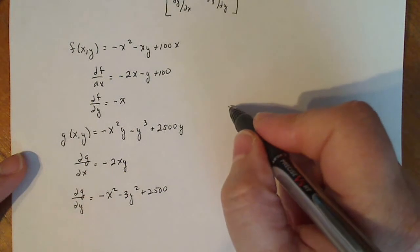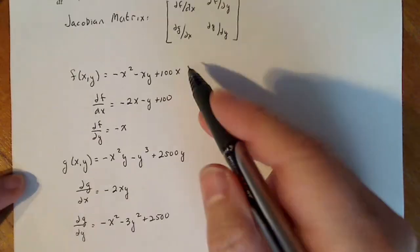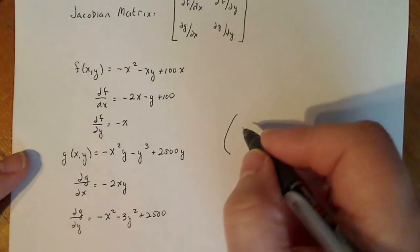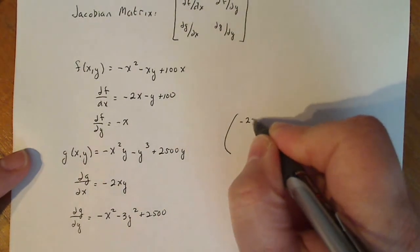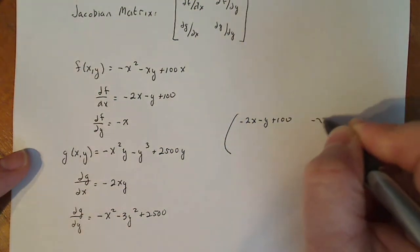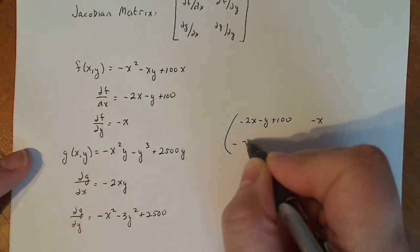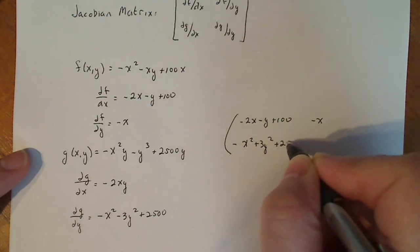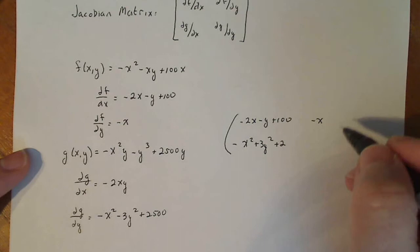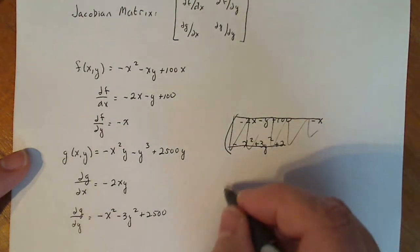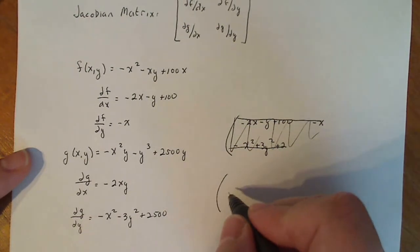So my Jacobian then turns out to be, if I put all of these functions into the right space, I get minus 2X minus Y plus 100, minus X, minus X squared plus 3Y squared plus 25. No, that's not the right order. Sorry. Get rid of that. Luckily, we have plenty of space on this one.